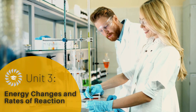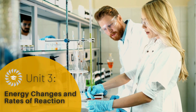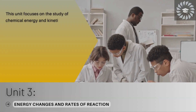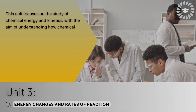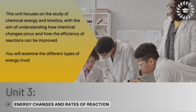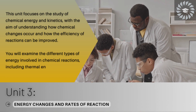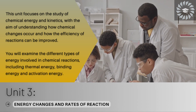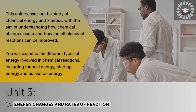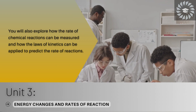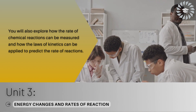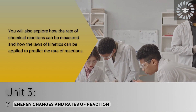Unit 3: Energy Changes and Rates of Reaction. This unit focuses on the study of chemical energy and kinetics, with the aim of understanding how chemical changes occur and how the efficiency of reactions can be improved. You will examine the different types of energy involved in chemical reactions, including thermal energy, binding energy, and activation energy. You will also explore how the rate of chemical reactions can be measured and how the laws of kinetics can be applied to predict the rate of reactions.